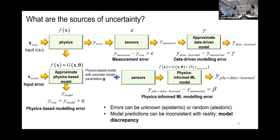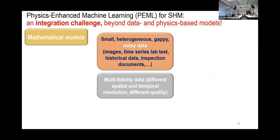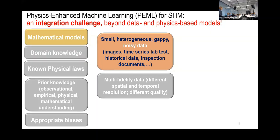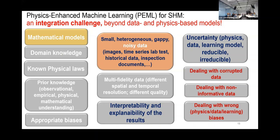So what is physics-enhanced machine learning? To me, it is an integration challenge: integrating all of these things and accounting for them. This goes beyond just having a mathematical model and heterogeneous or noisy data. It accounts for multi-fidelity data, different spatiotemporal correlations and qualities, different levels of prior knowledge, and must ensure interpretability and explainability while accounting for uncertainties. Most importantly, we have to deal with corrupted and non-informative data, and the learning biases we introduce at every step.